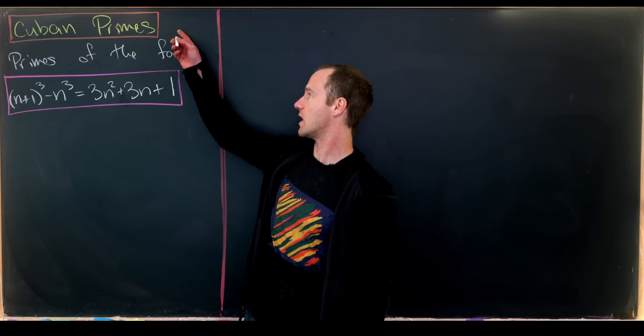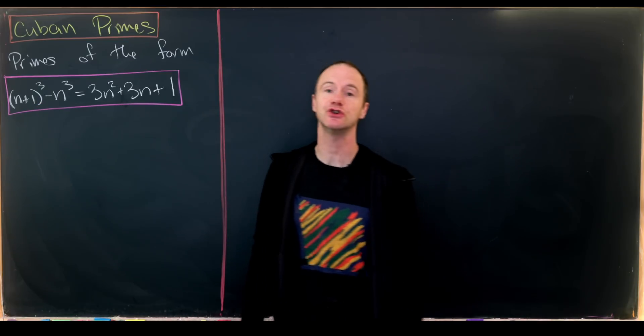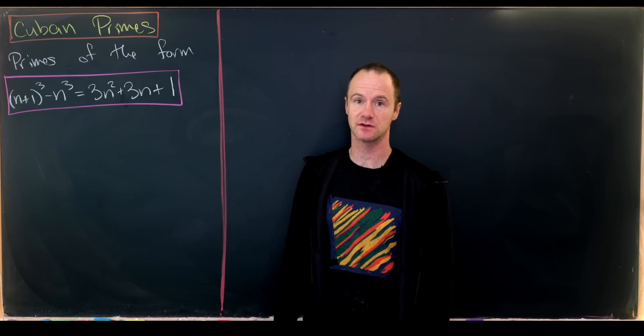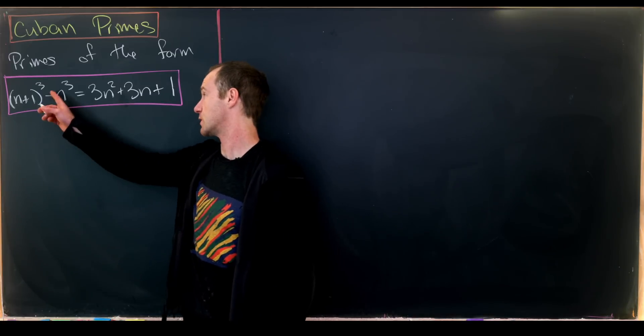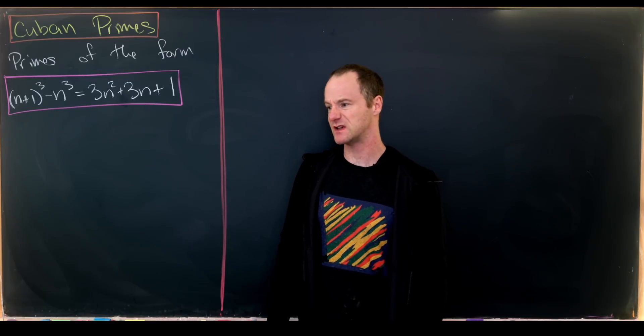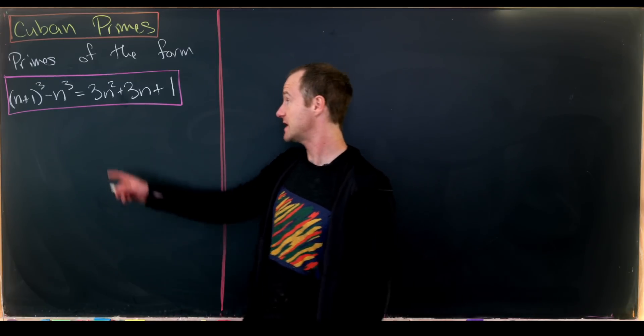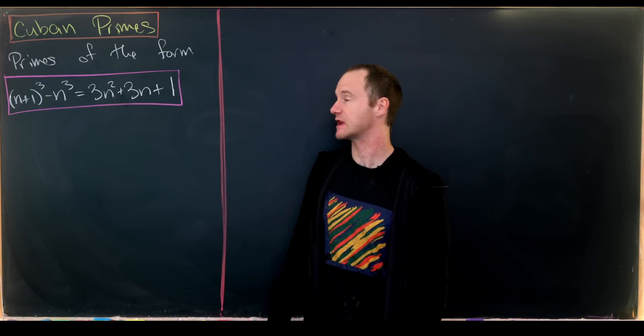Cuban primes are primes of the form of the difference between two consecutive cubes. In other words, we have a natural number n and we look at (n+1)³ - n³, which with some standard manipulation simplifies to 3n² + 3n + 1.